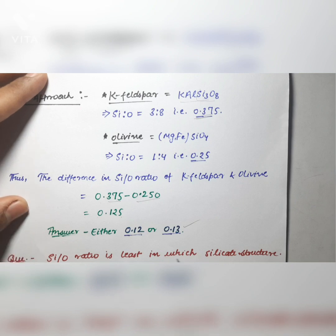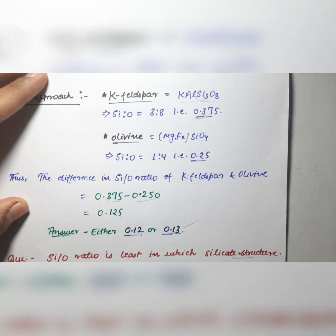Now here is a sub-question: in which silicate structure is the Si:O ratio the least? If you know the Si:O ratio in all silicate structures, you can easily calculate this. Please do calculate and let me know in the comment section what the answer is.